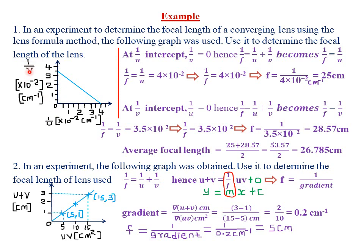Therefore, any value that you obtain along the 1/v axis, you must multiply by 10 to the power negative 2. The same applies to all values along the 1/u axis. From the lens formula, we said from our previous class that the intercepts will actually give us the focal length. So at the 1/u intercept — the point where the graph cuts the 1/u axis — that is what we call the 1/u intercept.